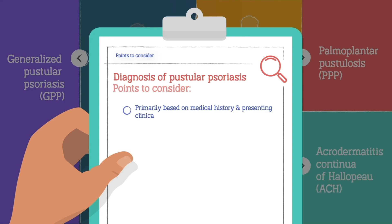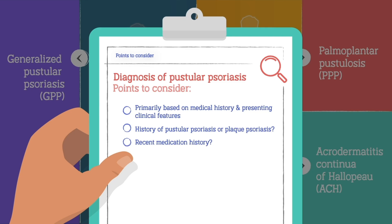The diagnosis of pustular psoriasis is predominantly clinical and is based upon the patient's medical history and presenting clinical features. Individuals should be asked about a history or family history of pustular psoriasis or plaque psoriasis. Recent medication history should also be determined.